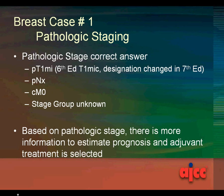The correct answer is pT1mi. Remember it is just MI — in the 6th edition the abbreviation MIC was used, but this has been changed in the 7th edition. pNX, cM0, and stage group unknown. Based on this pathologic stage, there is more information to estimate prognosis, and adjuvant treatment is selected.